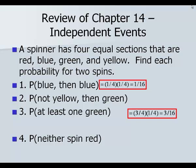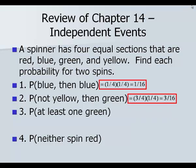Number two, the probability of not getting yellow is three-fourths. The probability of getting green is one-fourth. And you want both of these events to occur, so you're multiplying: three-fourths times one-fourth is three-sixteenths.